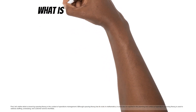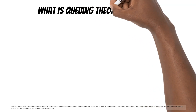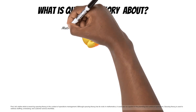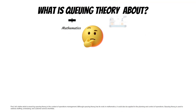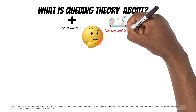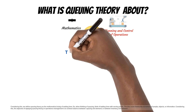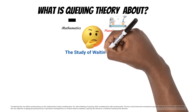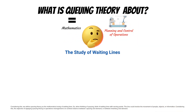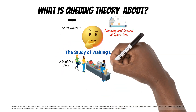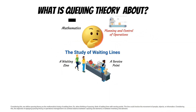First, let's define what is meant by queuing theory in the context of operations management. Although queuing theory has its roots in mathematics, it could also be applied to the planning and control of operations. Queuing theory is used to address staffing, scheduling, and customer service shortfalls. We define queuing theory as the mathematical study of waiting lines, so when thinking of queuing, think of waiting lines with serving points.